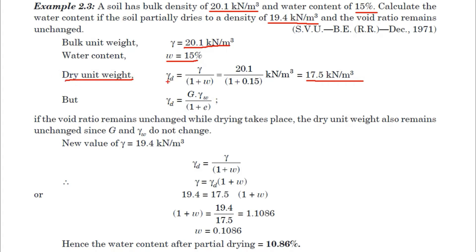The formula for dry unit weight is γd = G·γw / (1 + e). Since the void ratio remains unchanged, there is no change in specific gravity G or void ratio e — everything remains unchanged. Therefore G, γw, and e are all unchanged, and the dry unit weight stays at 17.5 kN/m³. The new bulk unit weight γ = 19.4 kN/m³ is given.